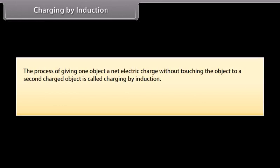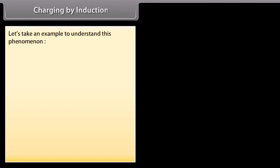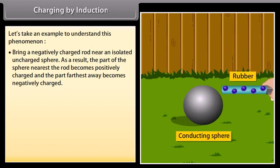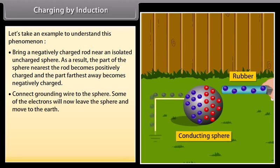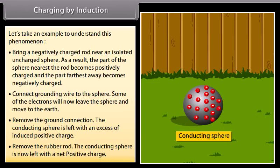Charging by induction: the process of giving one object a net electric charge without touching the object to a second charged object is called charging by induction. When a conductor is connected to the earth by means of a conducting wire, it is said to be grounded or earthed. Bringing a negatively charged rod near an isolated uncharged sphere causes the nearest part to become positively charged and the farthest part negatively charged. Connecting a grounding wire causes some electrons to leave the sphere. Removing the ground connection leaves the sphere with an excess of induced positive charge, and removing the rod leaves it with a net positive charge.